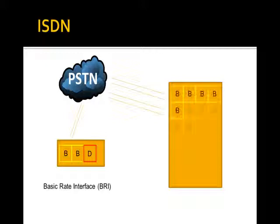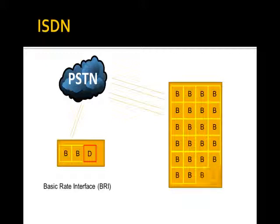You can make a data call at the same time you can make a voice call. Companies or bigger users — we're going to do calls on a call-by-call digital basis, just with more bearer channels. We're going to put 23 bearer channels together along with a single D channel and call it a primary rate interface. You may see a BRI — maybe, they're still out there. You will see PRI. PRI is still used to deliver PSTN switched calls — it is the predominant way PSTN switched calls are delivered if you need more than three trunks.